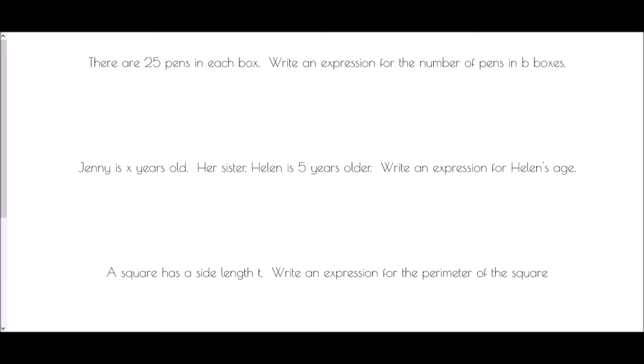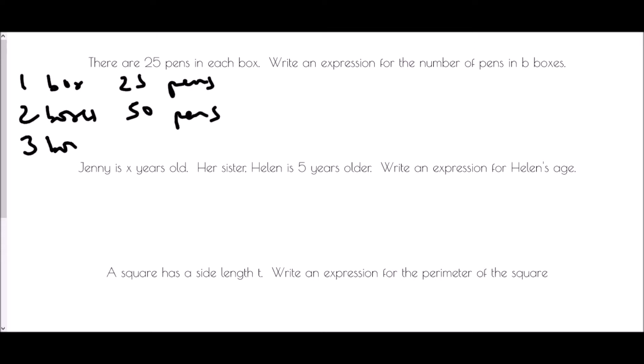Let's think about this. If there was one box we would have 25 pens. If there were two boxes I would have 25 and another 25, so 50 pens. Three boxes would be another 25, so 75 pens. That could be 1 times 25, 2 times 25, 3 times 25 — so if there are b boxes, I need to do 25 times b.